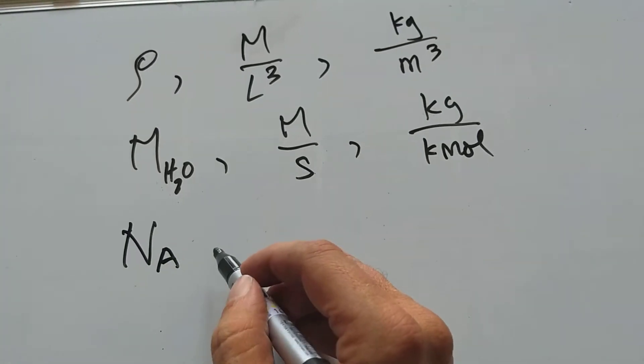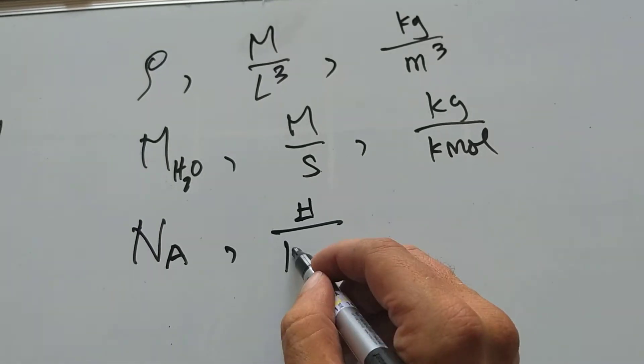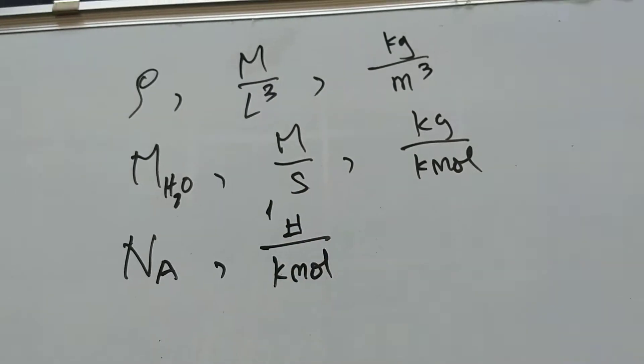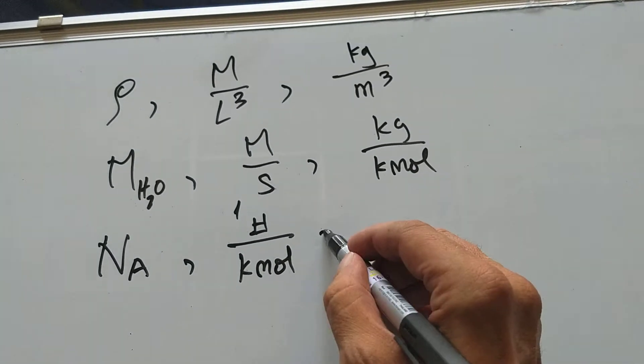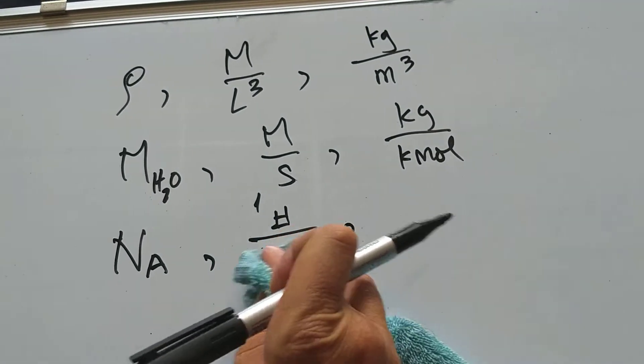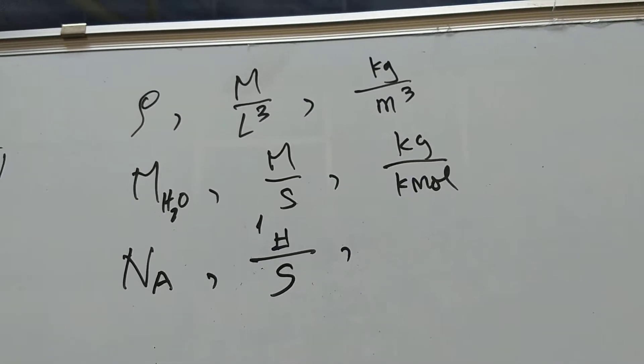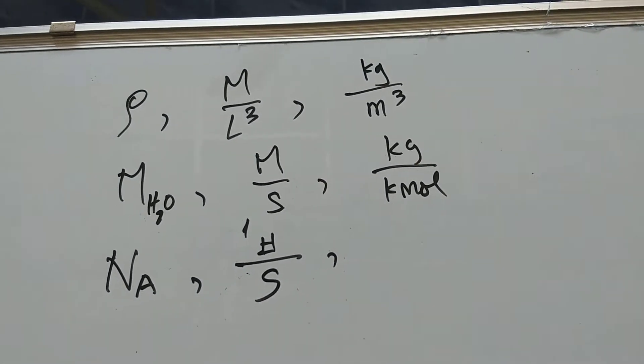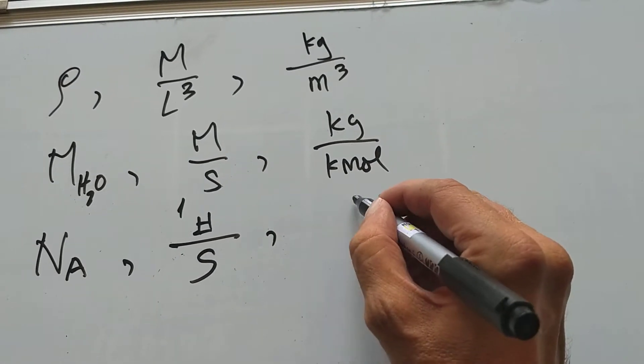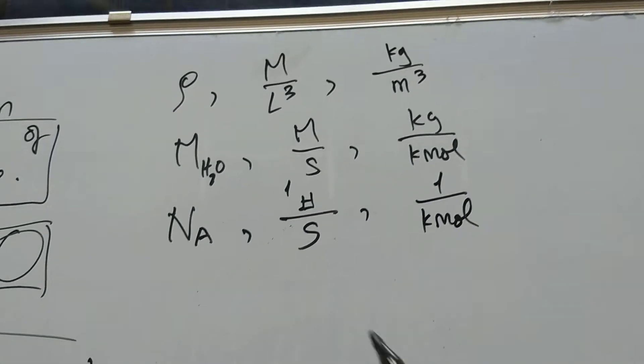Avogadro's number, the magic Avogadro's number, is particles per kilomole. But particles really has dimension one, dimensionless. I should be more logically consistent. Particles per substance. How many particles per substance of water? And in metric units, that's one over kilomoles.